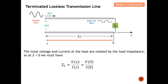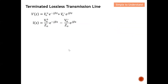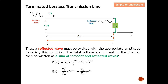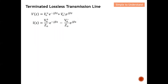The total voltage and current at the load are related by the load impedance. At z equal to zero, we must have ZL governing the relationship. So I substitute z equals zero into the equations. The exponential terms with z become zero, and e to the zero equals one, simplifying the expressions to give the load impedance equation.